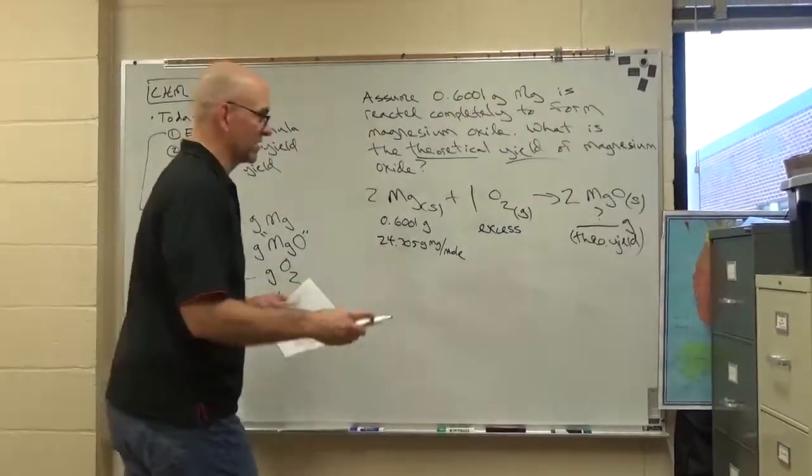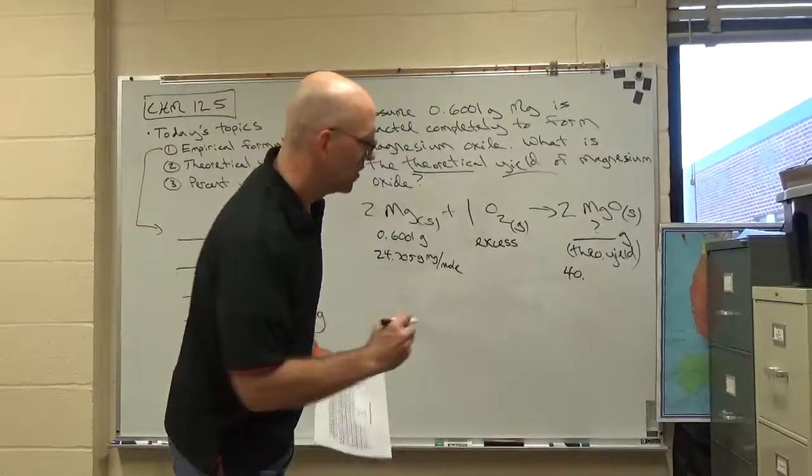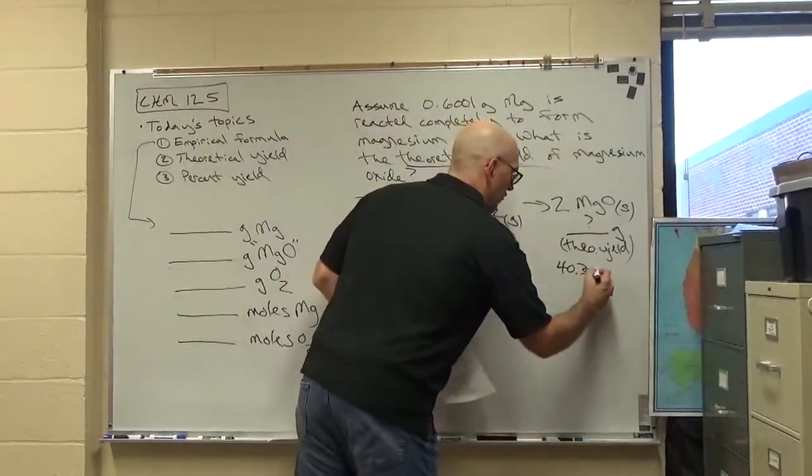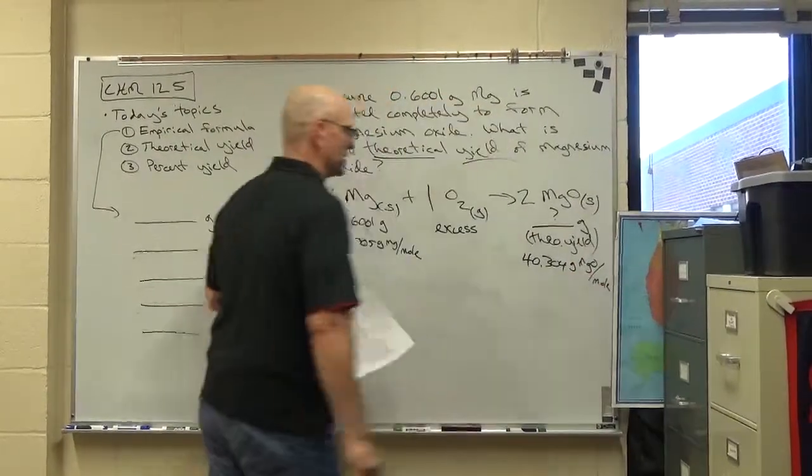Now if you've got a slightly different number, it doesn't really matter. And the molar mass over here is 40.304 grams of magnesium oxide for every mole of magnesium oxide.